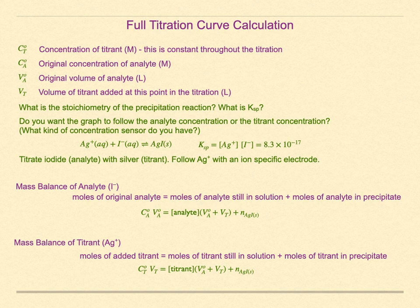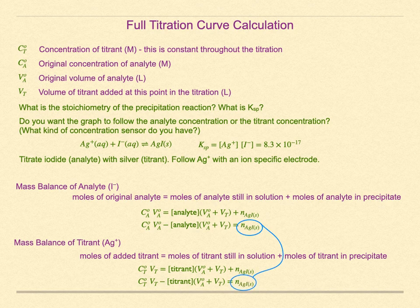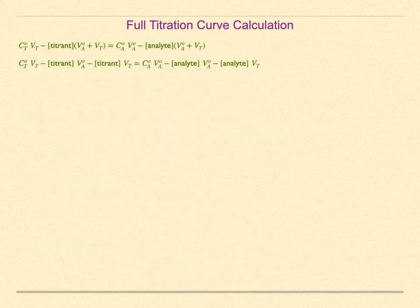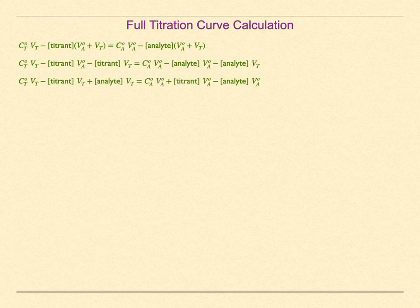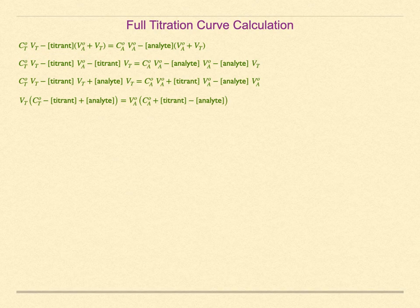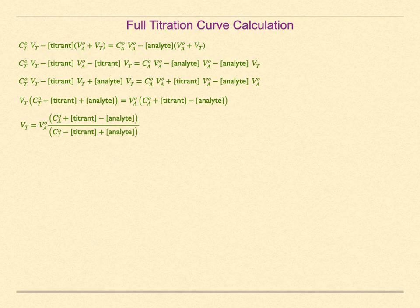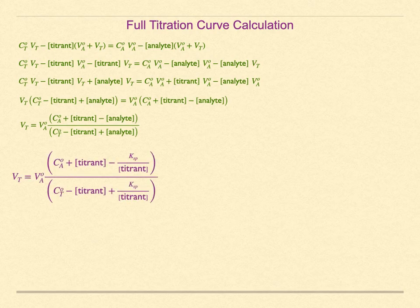The mass balance equation for AgI reflects its stoichiometry: one mole of precipitate corresponds to one mole of iodide. If the stoichiometry were different, a multiplicative factor would be introduced. The mass balance for the titrant is similar: equate the moles of added titrant with the sum of the moles of titrant in solution and the moles of titrant in the precipitate. Reorganizing both mass balance equations and equating them, then multiplying out, gathering terms, and factoring out the concentration terms, we can isolate the added titrant volume as our experimental variable.